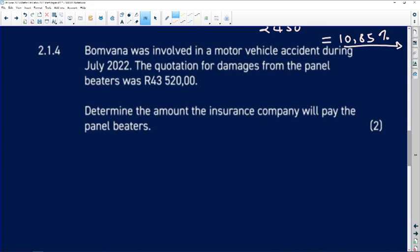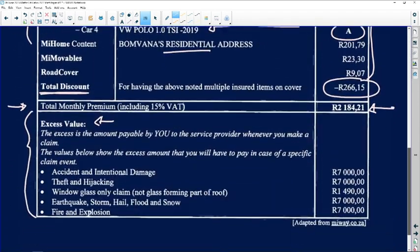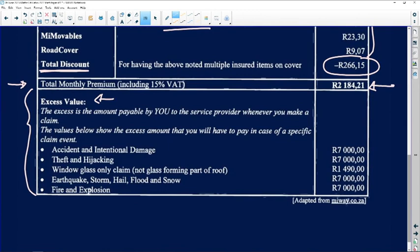Question 2.1.4: Bomvana was involved in a motor vehicle accident during July 2022. The quotation for damages from the panel beater was R43,520. Determine the amount the insurance company will pay. This person has an excess that they need to pay.